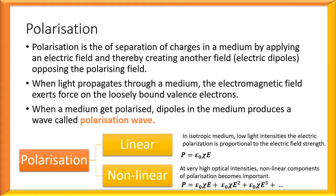In an isotropic medium, when treated with a very low intensity electromagnetic radiation, the electrical polarization which occurs will be proportional to the intensity of the electric field strength of that radiation. That is, we can get a linear relation such that polarization P is equal to ε₀χE, where ε₀ is the absolute permittivity of the medium, χ is the susceptibility of the medium, and E is the electric field of the electromagnetic radiation.